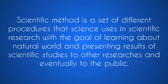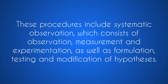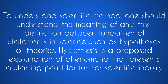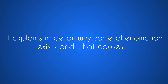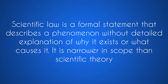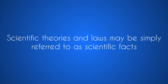But what is the scientific method? Scientific method is a set of different procedures that science uses in scientific research with the goal of learning about the natural world and presenting results of scientific studies to other researchers and eventually to the public. These procedures include systematic observation, which consists of observation, measurement, and experimentation, as well as formulation, testing, and modification of hypotheses. Hypothesis is a proposed explanation of phenomena that presents a starting point for further scientific inquiry. Scientific theory is a well-substantiated explanation of some aspect of the natural world based on a body of facts that have been repeatedly confirmed through observation and experimentation. Scientific law is a formal statement that describes a phenomenon without detailed explanation of why it exists or what causes it; it is narrower in scope than scientific theory. Scientific theories and laws may be simply referred to as scientific facts.